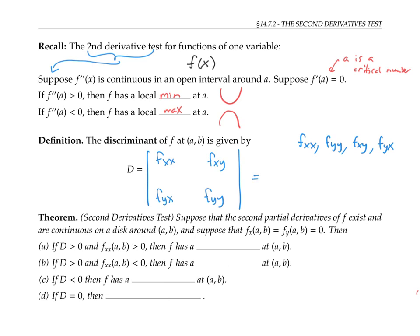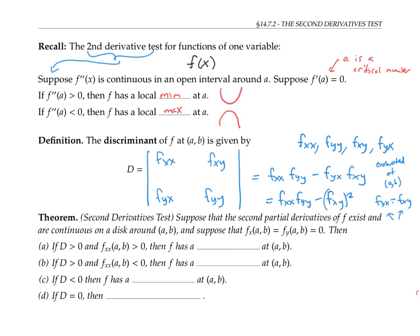In other words, that's f sub x,x times f sub y,y minus f sub y,x times f sub x,y, evaluated at (a,b). In most situations this can be rewritten as f sub x,x times f sub y,y minus (f sub x,y) squared, since f sub y,x is the same as f sub x,y as long as these partial derivatives are continuous near the point (a,b).